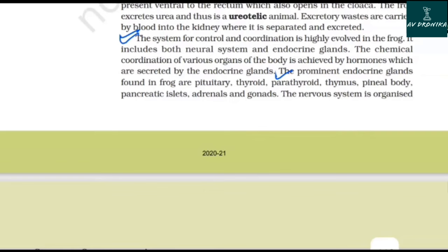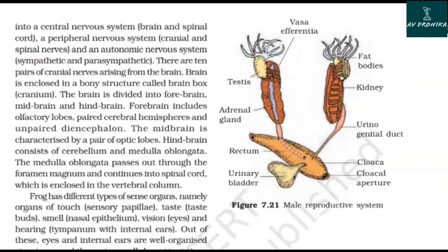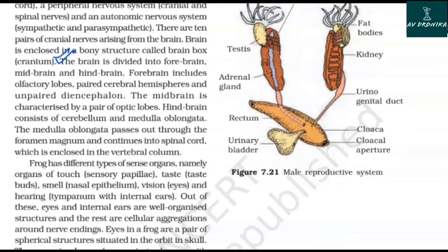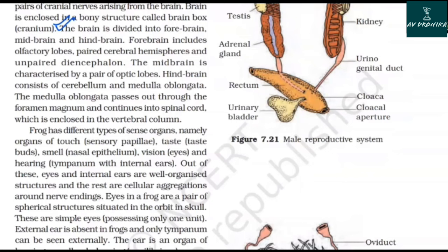The nervous system is organized into a central nervous system (brain and spinal cord), a peripheral nervous system (cranial and spinal nerves), and an autonomic nervous system (sympathetic and parasympathetic). There are 10 pairs of cranial nerves arising from the brain. The brain is enclosed in a bony structure called the brain box or cranium, and is divided into forebrain, midbrain, and hindbrain. The forebrain includes olfactory lobes, paired cerebral hemispheres, and unpaired diencephalon. The midbrain is characterized by a pair of optic lobes. The hindbrain consists of the cerebellum and medulla oblongata, which continues into the spinal cord enclosed in the vertebral column.